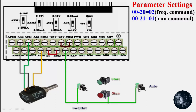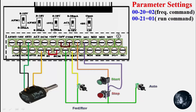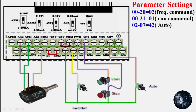The second point from the reverse selector switch is given to the reverse terminal. We connect the second point of the stop button to the first point of the start button. Then from the second point of the start button we connect to the forward terminal. From the common point of the start and stop buttons we connect to MI1, multi-function input 1. The second point of the auto selector switch is given to MI7.